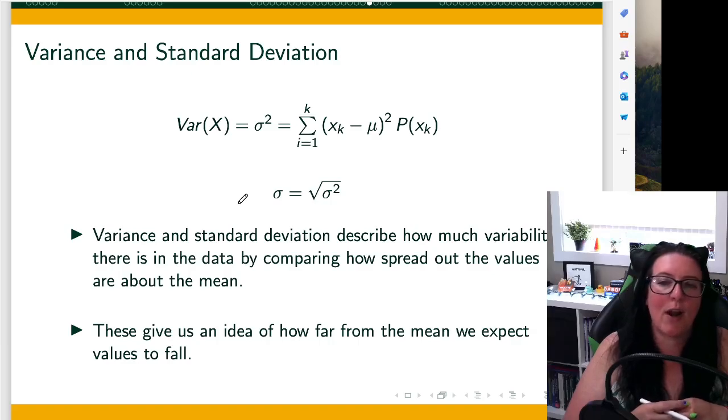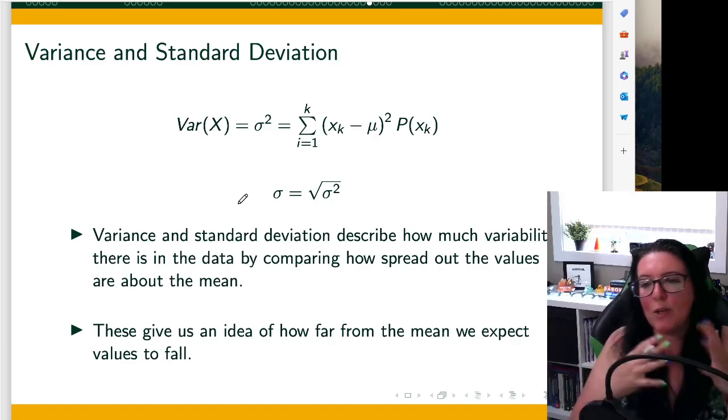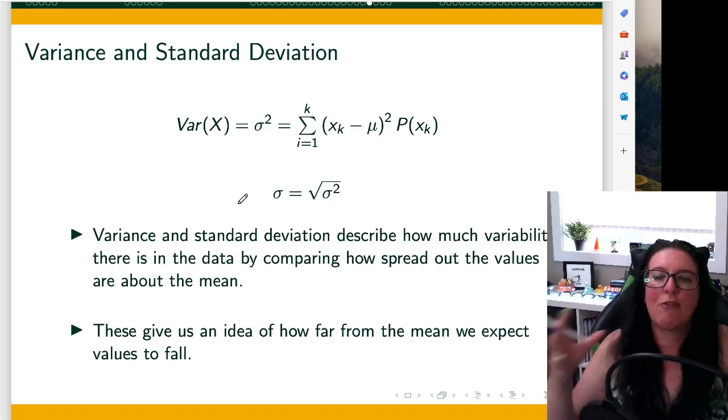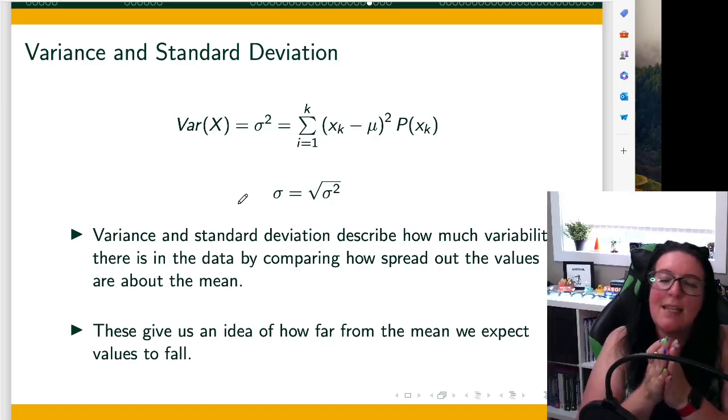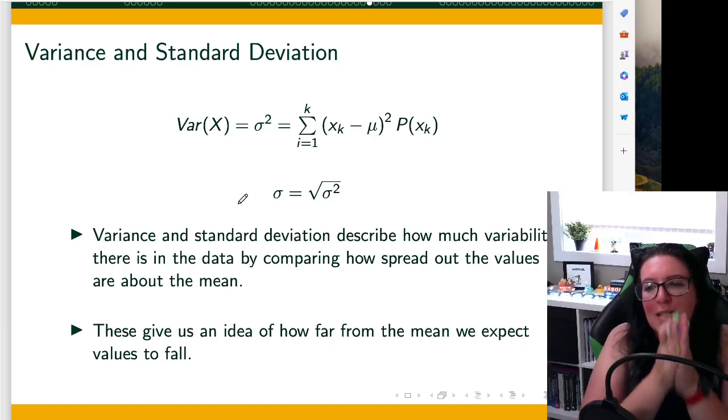So we're simply looking at the spread of those values about the mean. Variance and standard deviation describe how much variability, how much dispersion there is from that mean, that measure of central tendency. In this case, we're looking at that expected value.